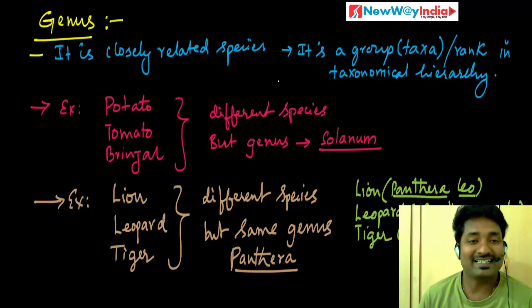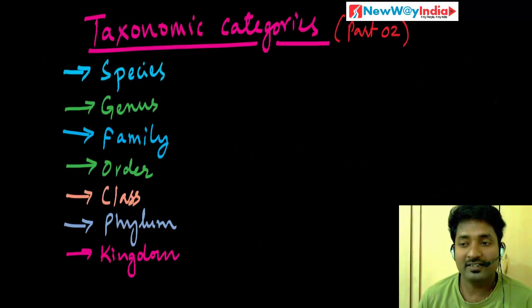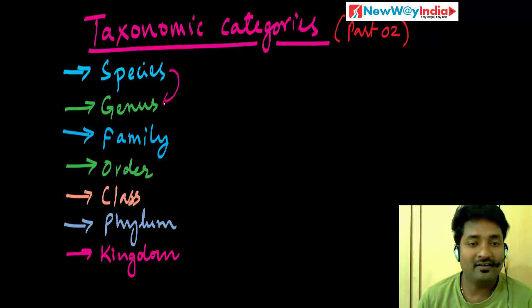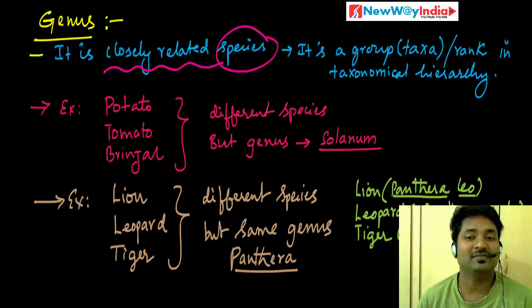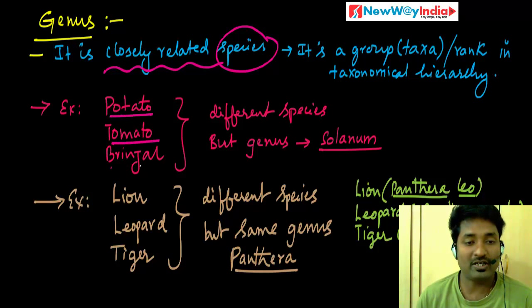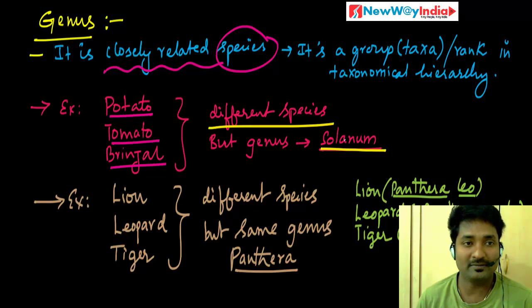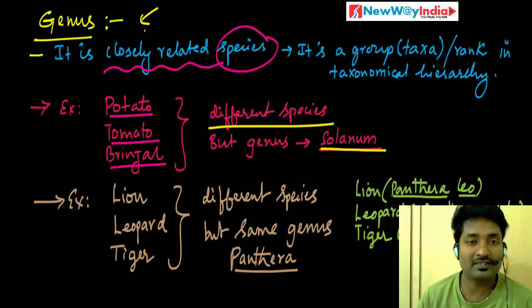The next thing is genus. What is genus? It is next above the species level. Closely related species combined are called a genus. It is a group ranked in a hierarchical system constituted by a group of related species. For example, potato, tomato, and brinjal are different species but belong to the same genus Solanum. Similarly, lion, leopard, and tiger are different species but same genus Panthera.